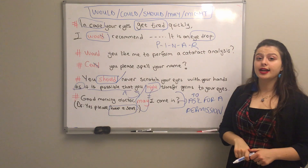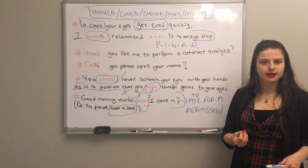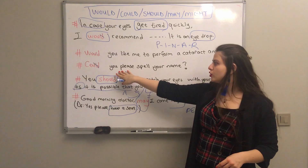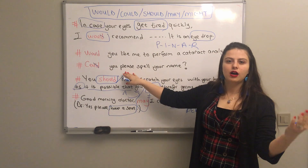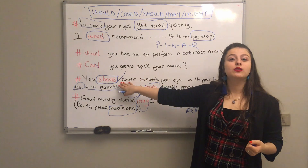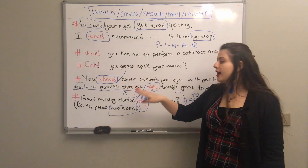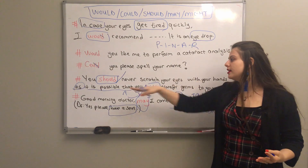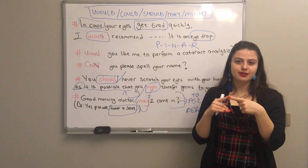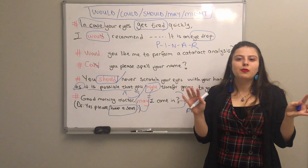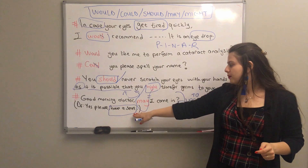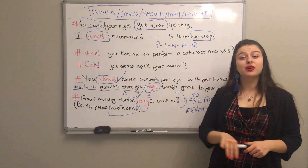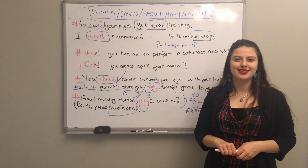Today we talked about would, could, should, may, and might. 'Would' is used to understand someone's preferences and ask for information. 'Could' is used to ask someone to do something. 'Should' is used for advice. 'May' and 'might' both express possibility, but 'may' at the start of a question asks for permission. If you have any questions, please let me know. You will find extra materials to practice at the end. Thank you.